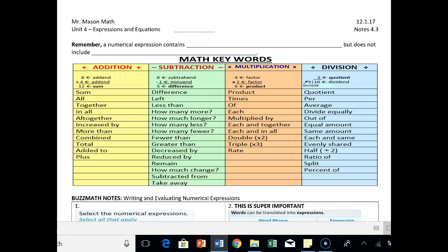Hey there, CGM students and welcome to Notes 4.3 part 1. So from yesterday, remember that a numerical expression contains numbers, operations, and grouping symbols, but does not include equal signs.